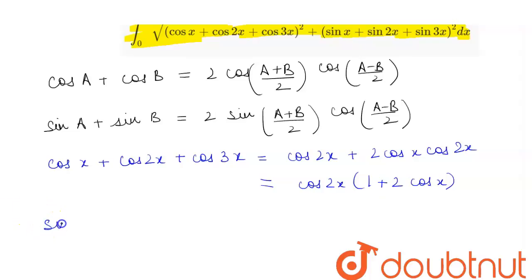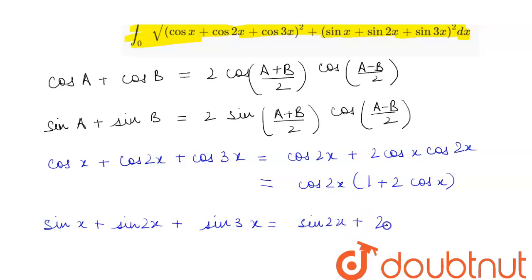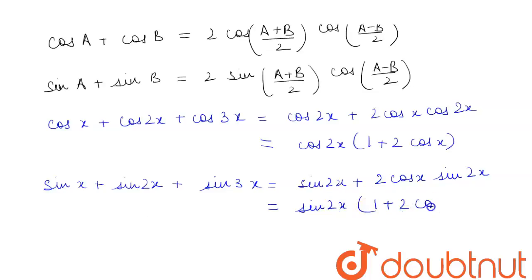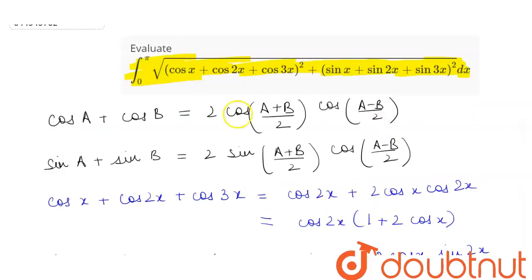For the sine part, sinx + sin2x + sin3x equals sin2x plus, applying the sine formula to sinx + sin3x, we get 2·cosx·sin2x. Taking sin2x as common, we are left with sin2x·(1 + 2cosx).